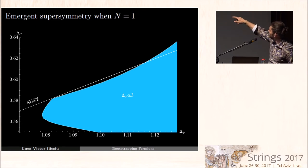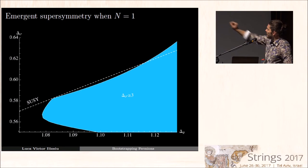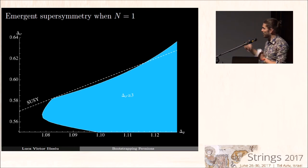I show bounds, assuming that sigma prime is irrelevant, and one sees that the kink over there that was the top kink from before is extremely close to the Susie line. However, it's not quite on it. That implies that in order to get the kink to be precisely on the supersymmetric line, one needs to have sigma prime to be marginally relevant. So it has a dimension of about 2.95. That actually agrees with results from epsilon expansion.